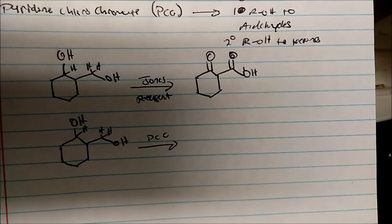So from primary alcohols, you get aldehydes using PCC. From secondary alcohols, you get ketones. So therefore, knowing this, I know my product should look something like this.